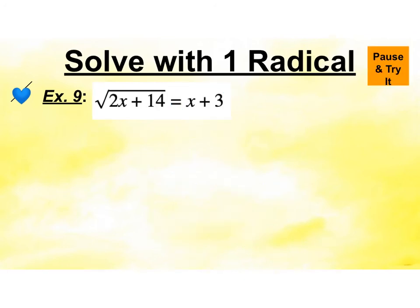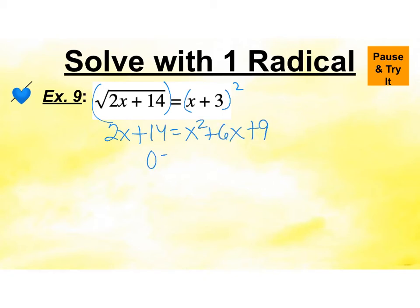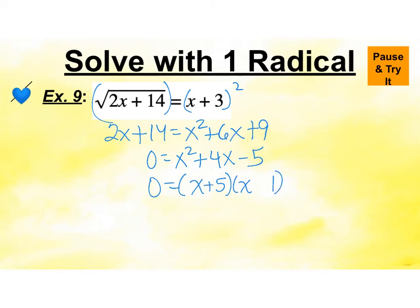Pause and try this one. Squaring both sides gives 2x plus 14 equals x squared plus 6x plus 9. Put it into standard form, then factor. So x equals negative 5 and x equals 1. When I take the time to check, negative 5 does not work — it's extraneous. The only answer is x equals 1.